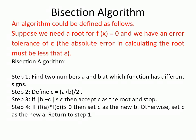After satisfying this condition, find c equal to (a + b) / 2. Then check the accuracy condition: the modulus of b minus c should be less than or equal to the required accuracy. The accuracy might be up to three decimal places (0.001), two decimal places (0.01), or one decimal place (0.1). If the modulus of b minus c is less than the accuracy, then c is accepted as the root and we stop the iteration.